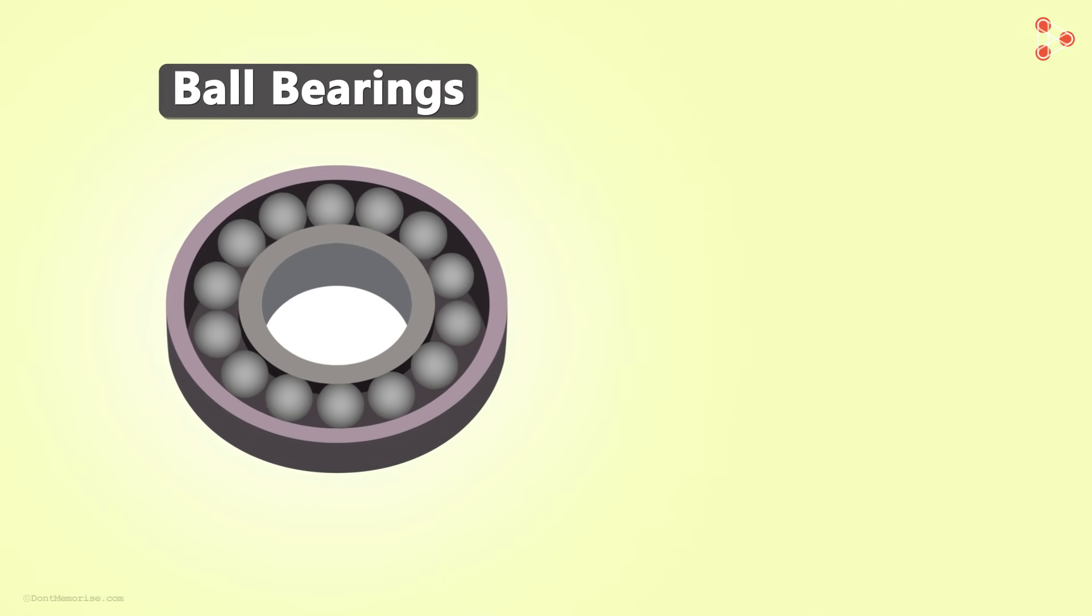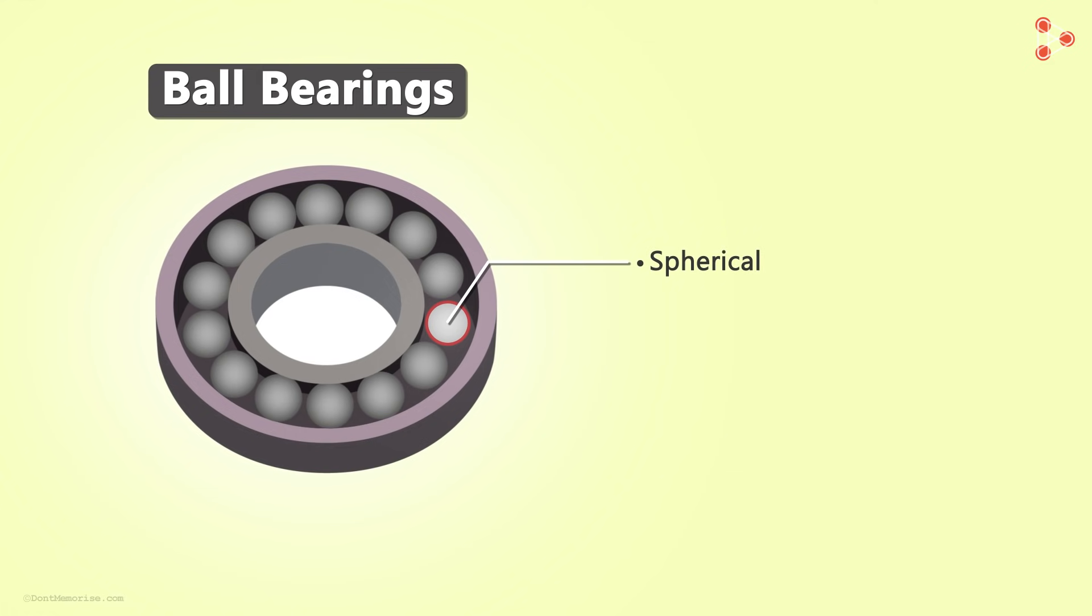Do you remember seeing ball bearings? They are spherical metal balls used in many mechanical structures which have moving parts. They are generally made up of stainless steel, brass or ceramic. They reduce friction to a great extent which in turn reduces the wear and tear of machine parts.